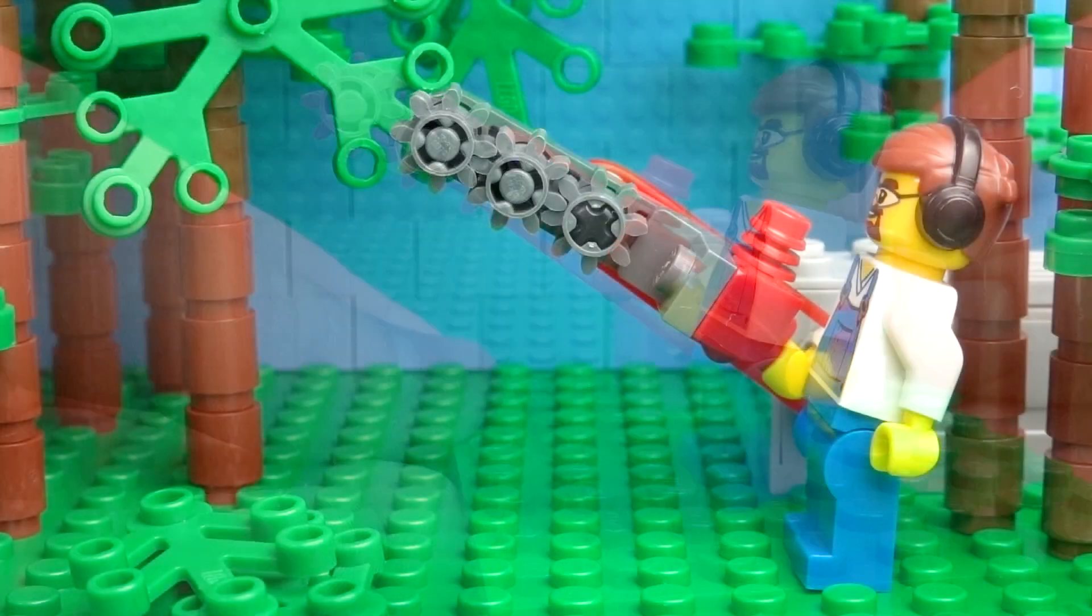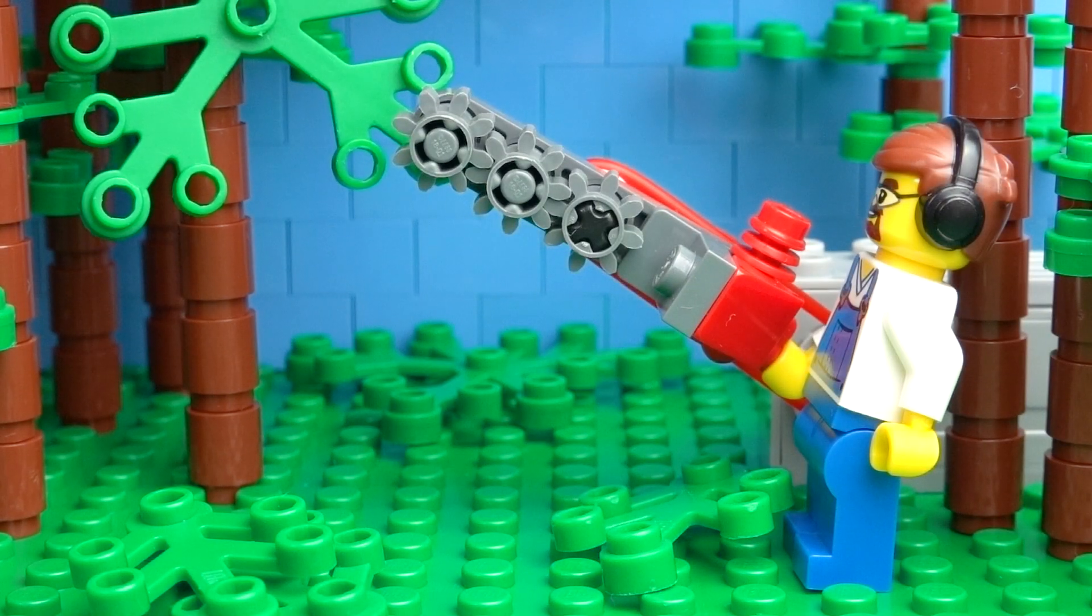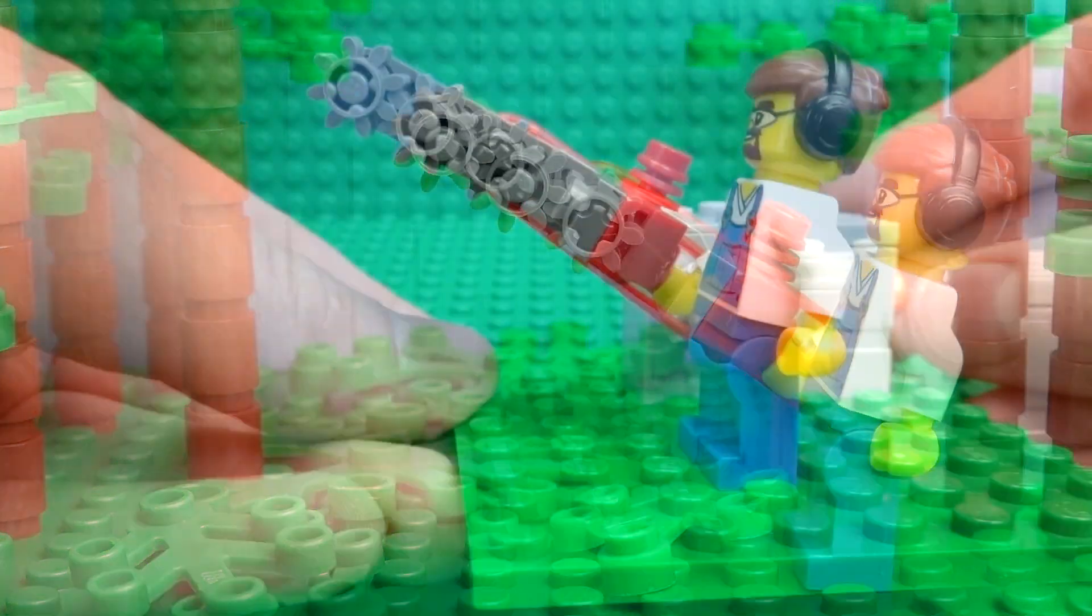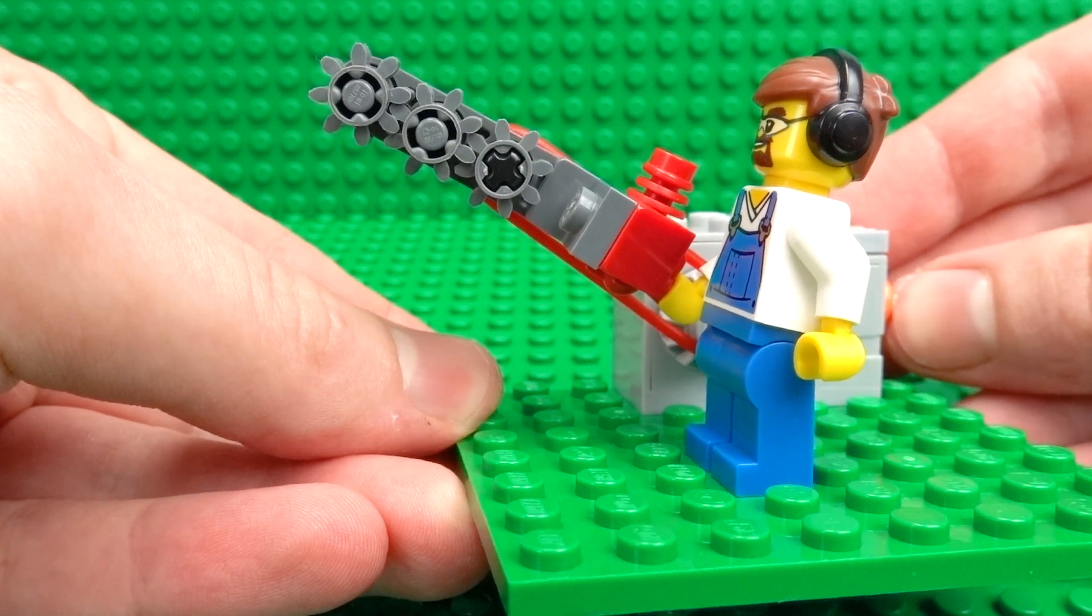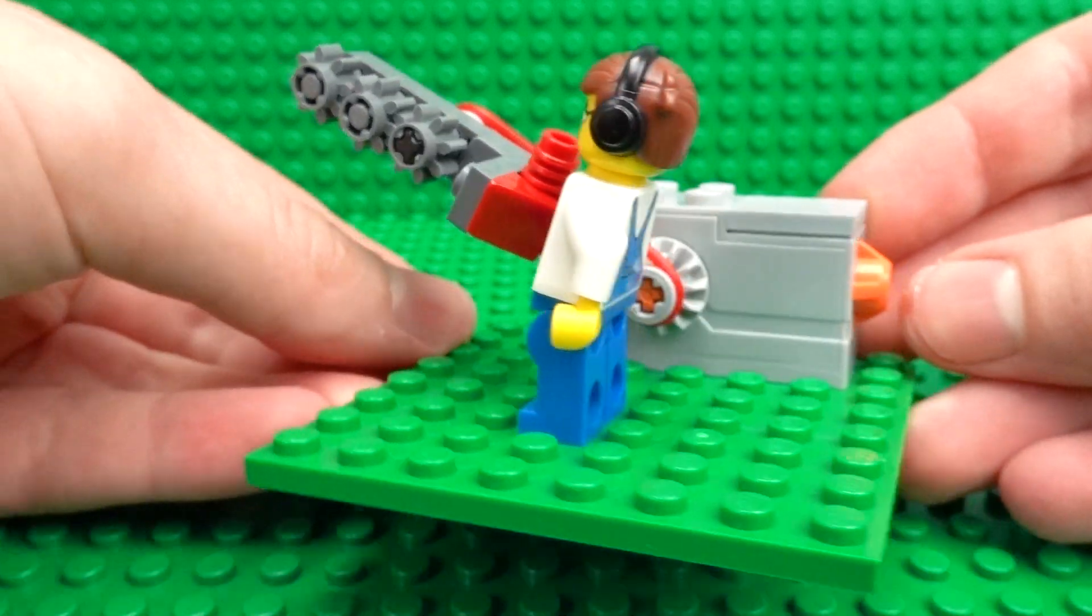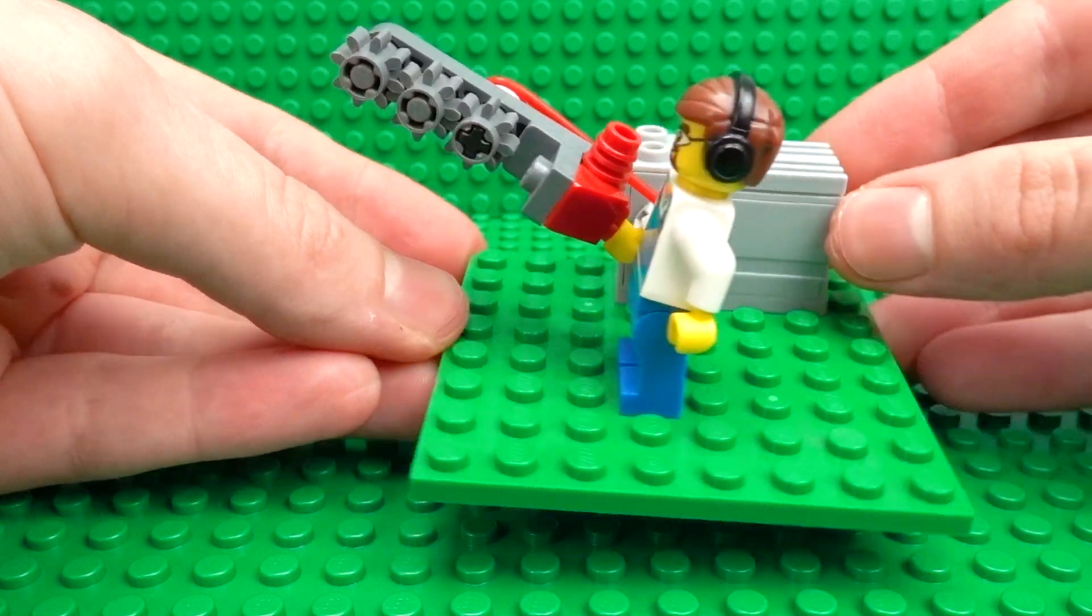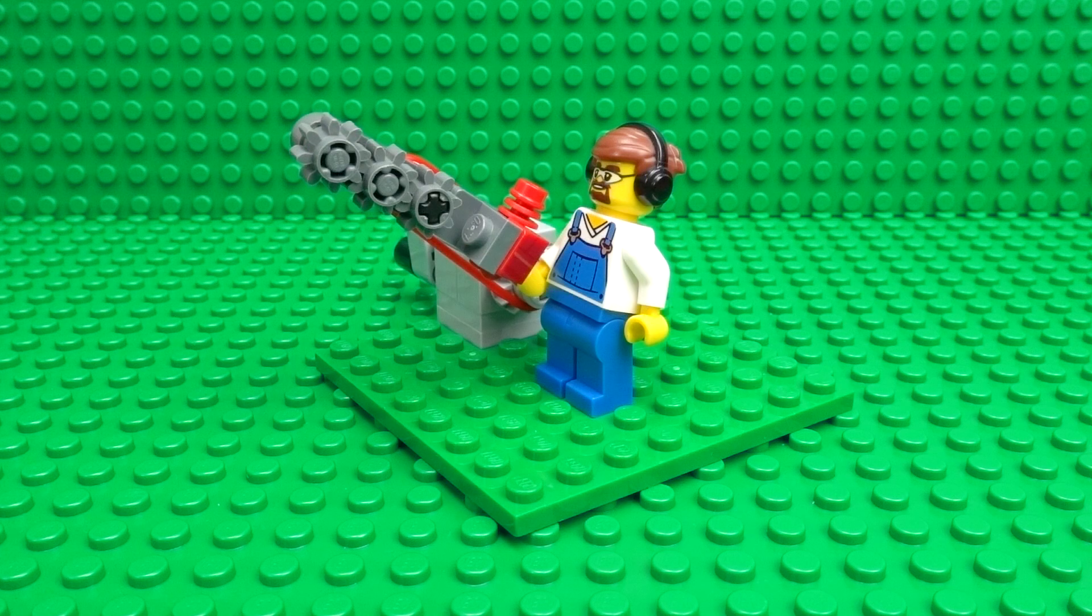And depending on the angle which you view this from, it actually looks pretty convincing. Of course, this is actually activated with the help of a wind-up motor brick positioned at the back, and this is what creates that really fast spinning blade effect just like you get in real life.